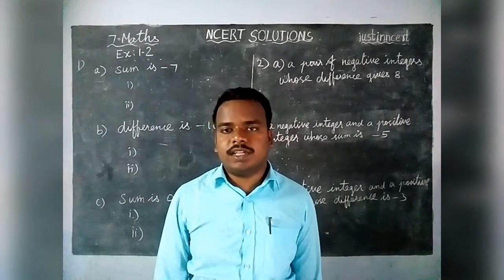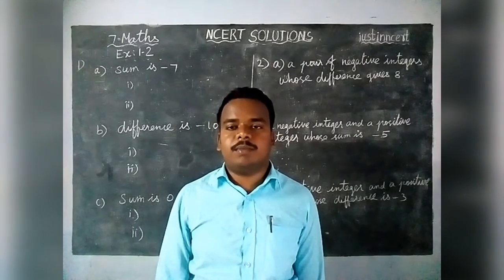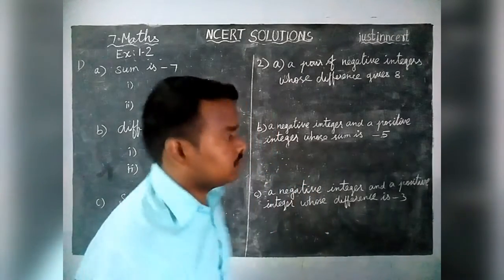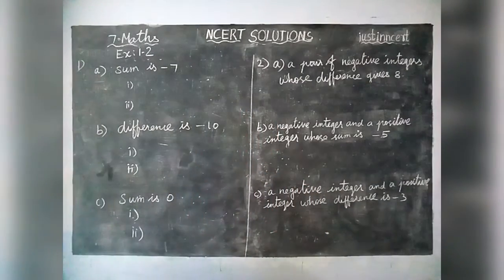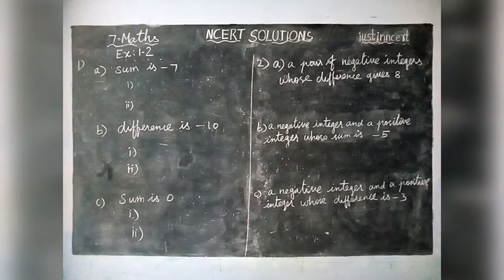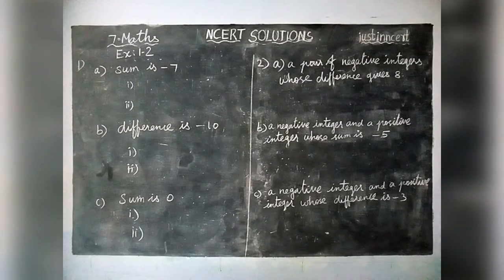Hi students, welcome to NCRT Solutions. Today we are going to see 7th standard maths exercise 1.2. First question: write down a pair of integers whose sum is minus 7. When we are adding two integers we should get minus 7 as the answer.